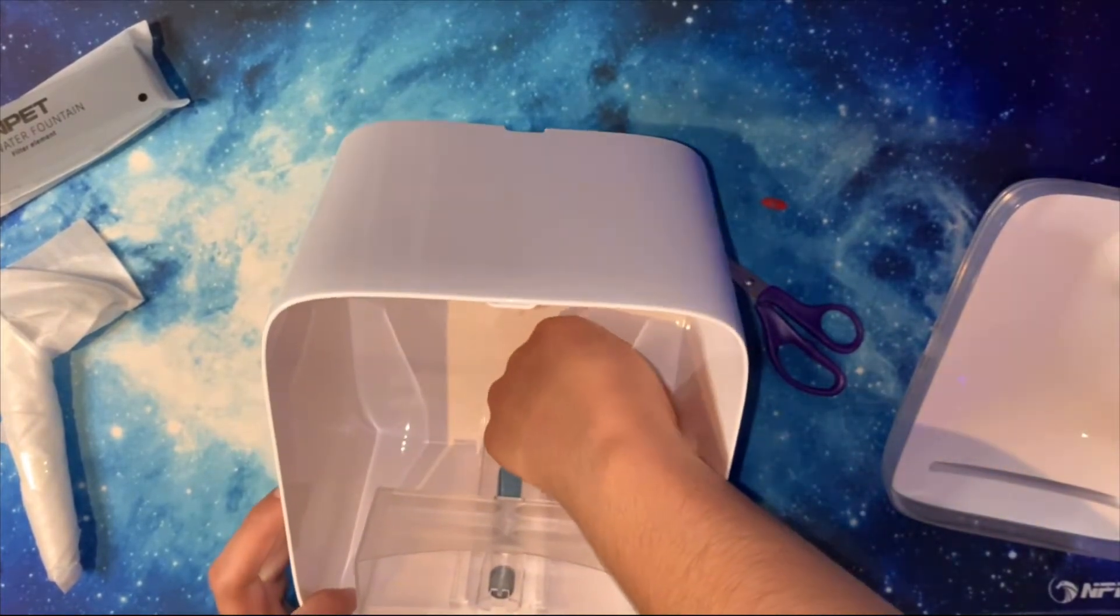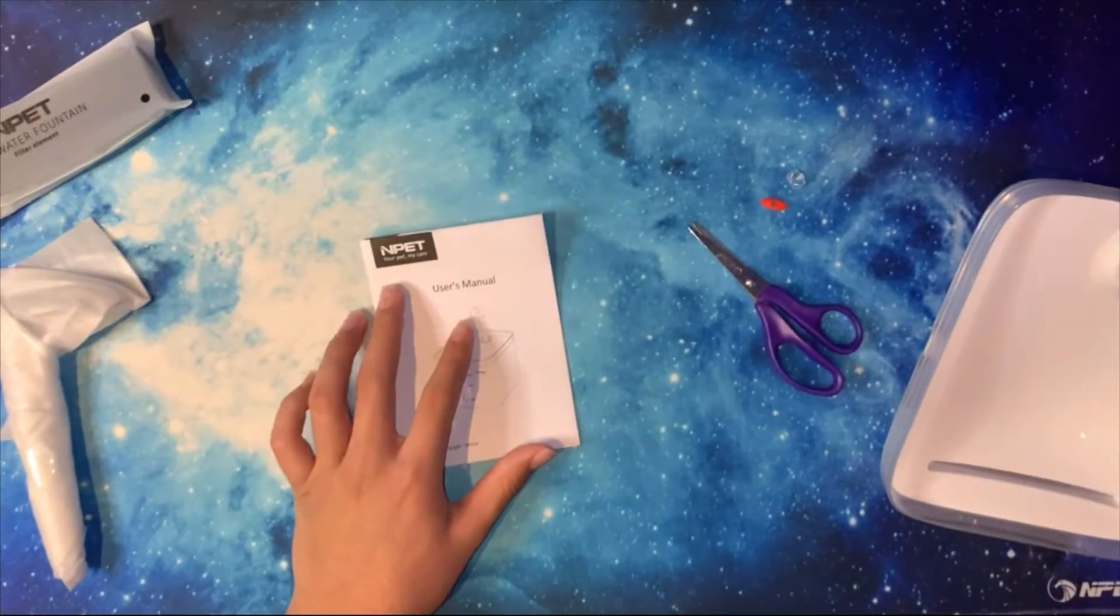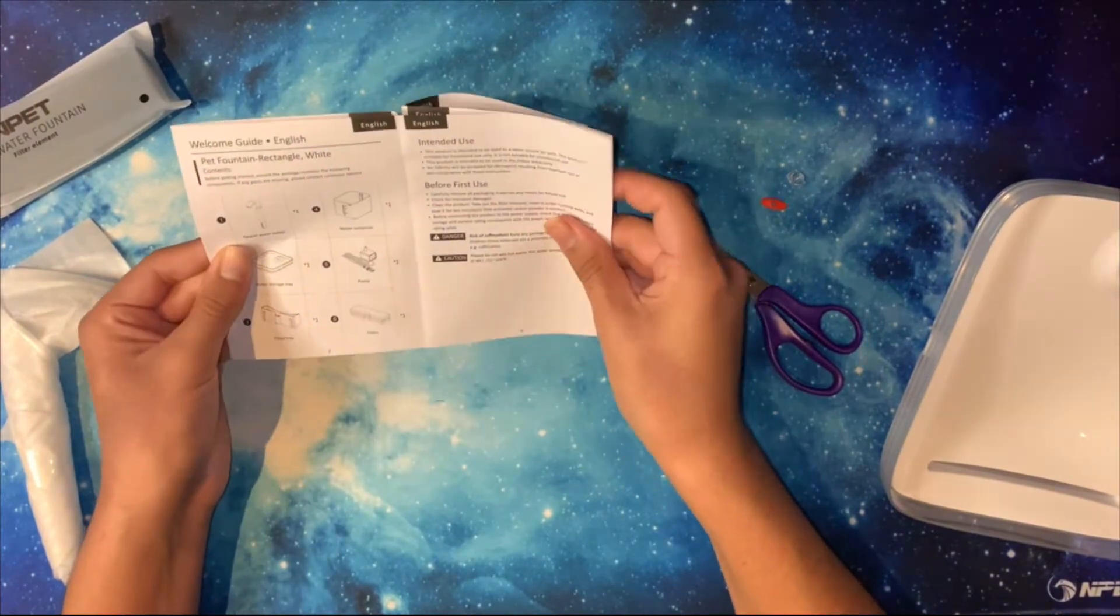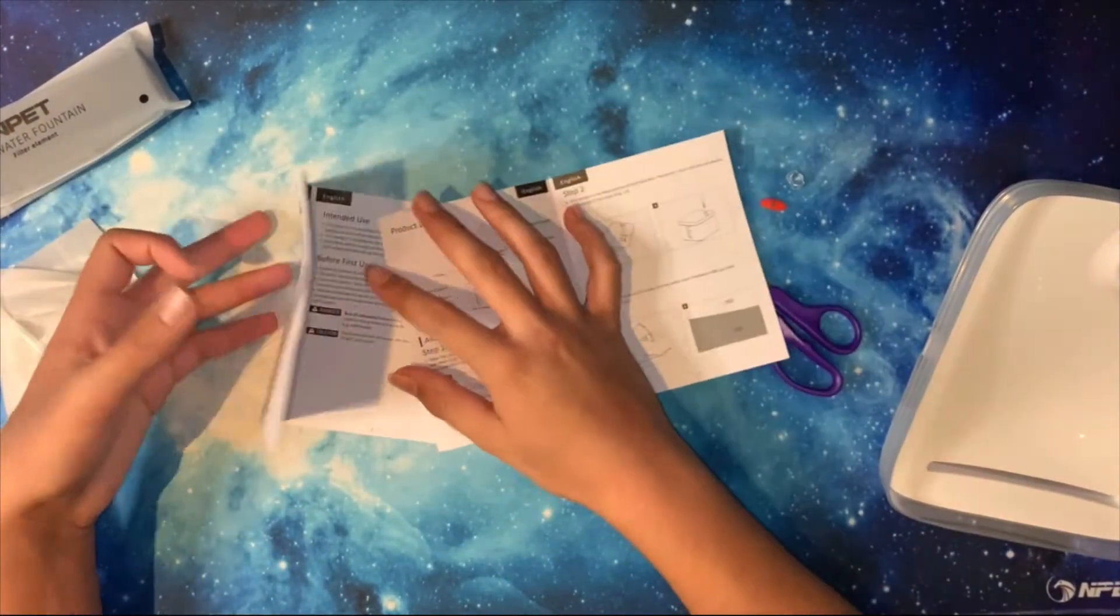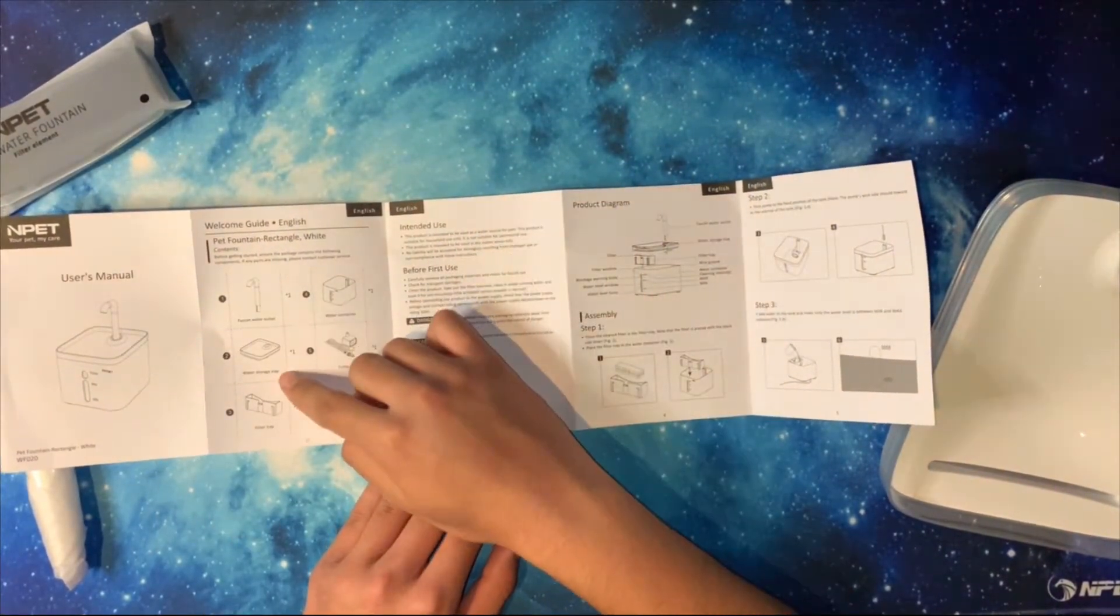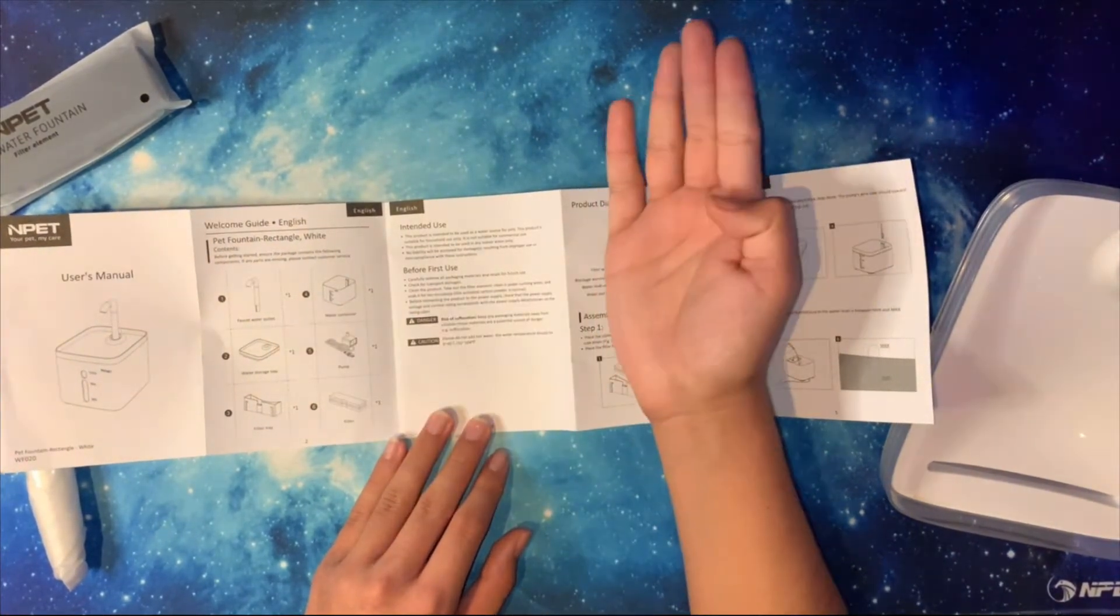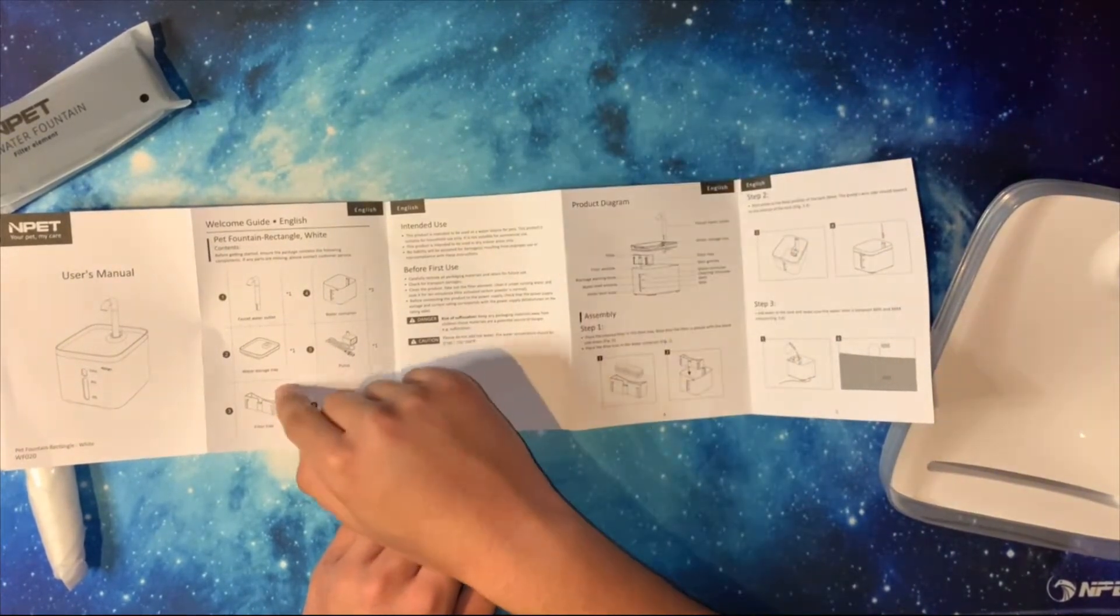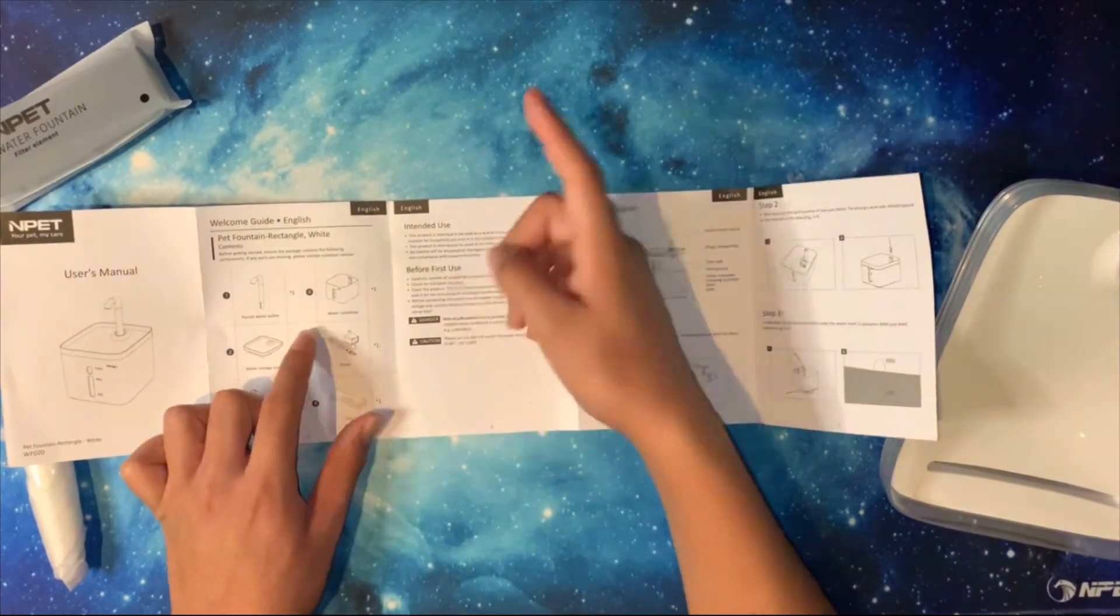Let's look at the user manual. Here we have the user manual. I have to look at it before we try it out because I have no idea how to put this together. So it comes with six parts: it comes with the storage, it has a faucet water outlet, so it's like a sink but it pours out water for the dog to drink, a water storage tray, a filter tray, a water container of course, and a pump.